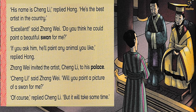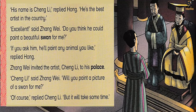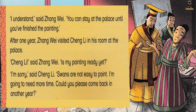Zhang Wei invited the artist Cheng Li to his palace. "Cheng Li," said Zhang Wei, "will you paint a picture of a swan for me?" "Of course," replied Cheng Li, "but it will take some time." "I understand," said Zhang Wei. "You can stay at the palace until you finish the painting."